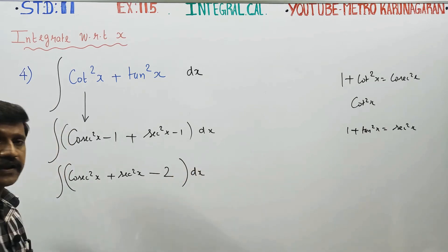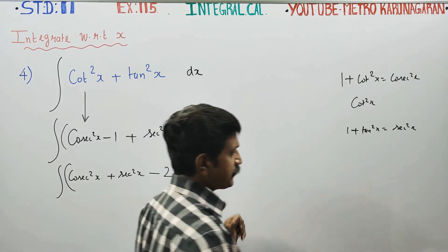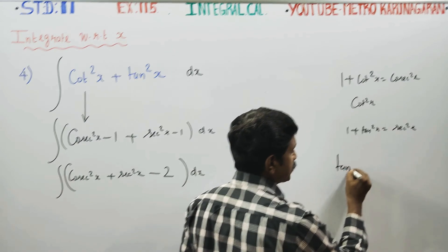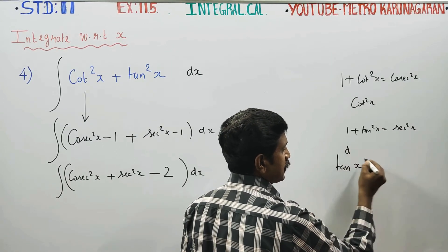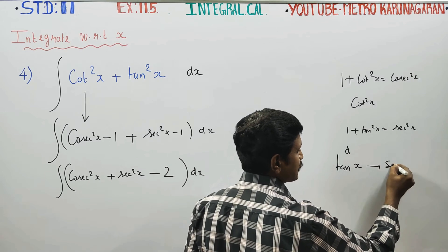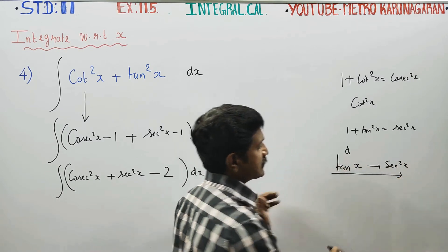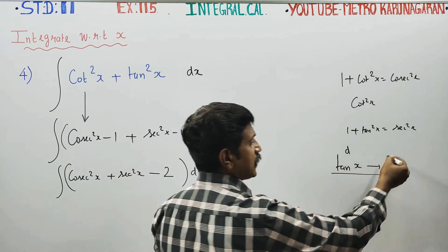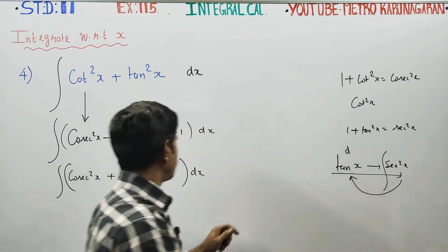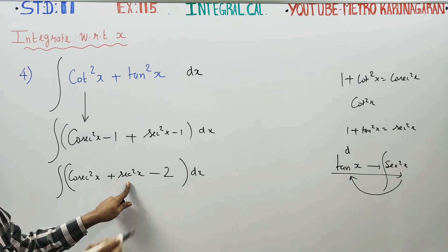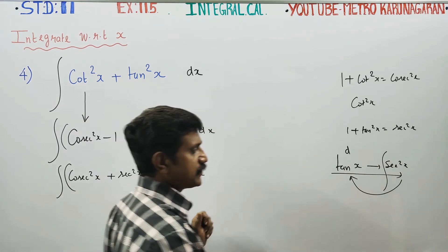Now for the integration: differentiation of tan x gives sec square x. Therefore, integration of sec square x gives tan x. That formula is ready — integration of sec square x is tan x.